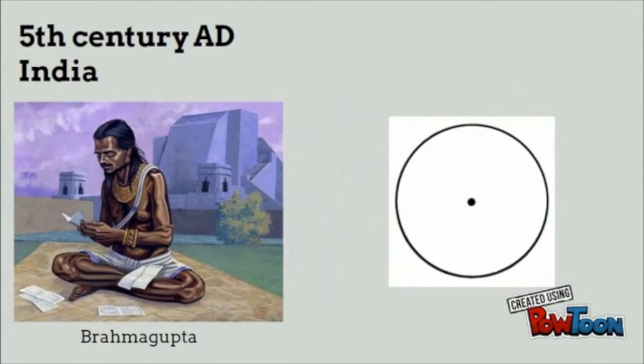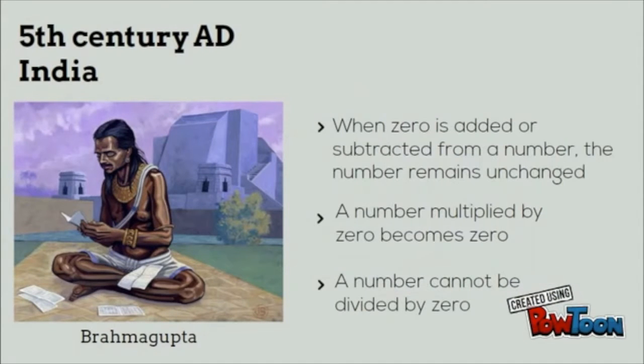Mathematician Brahmagupta developed a symbol for zero, a dot. He also established the rules of using zero in basic math operations.